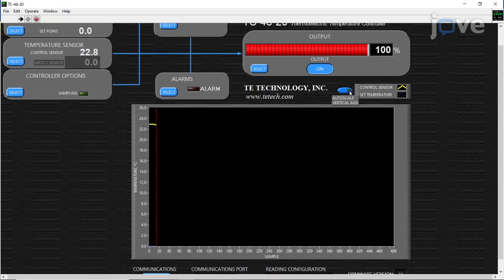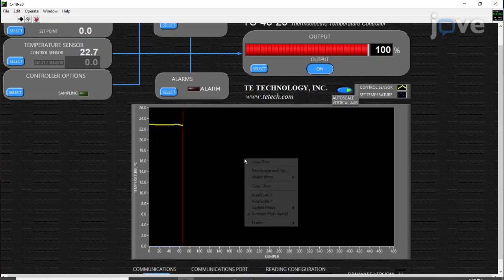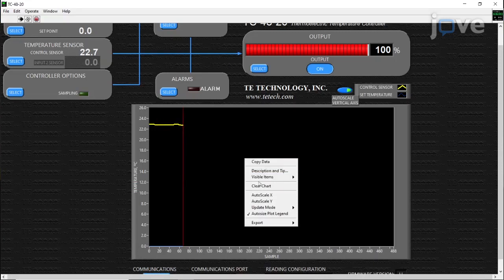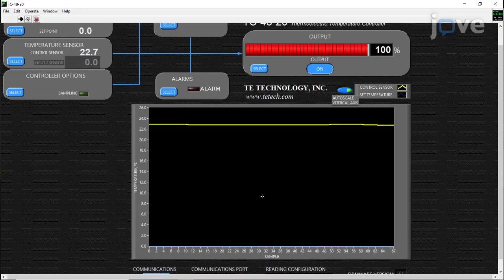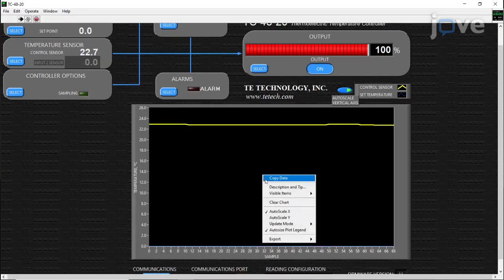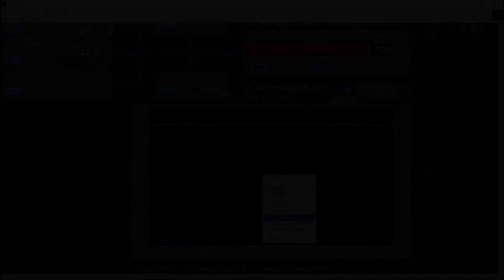Click on the oval button next to the company logo labeled Auto Scale. Note the yellow line that shows the temperature readout. Inside the plot area, right-click to adjust the plot to your liking, such as the scaling.